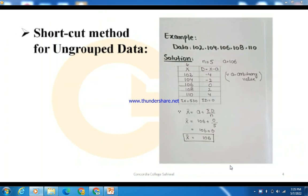Now we put values into the formula. First we put the value of a, which is 106, plus summation d over n. After calculation, this equals 106.